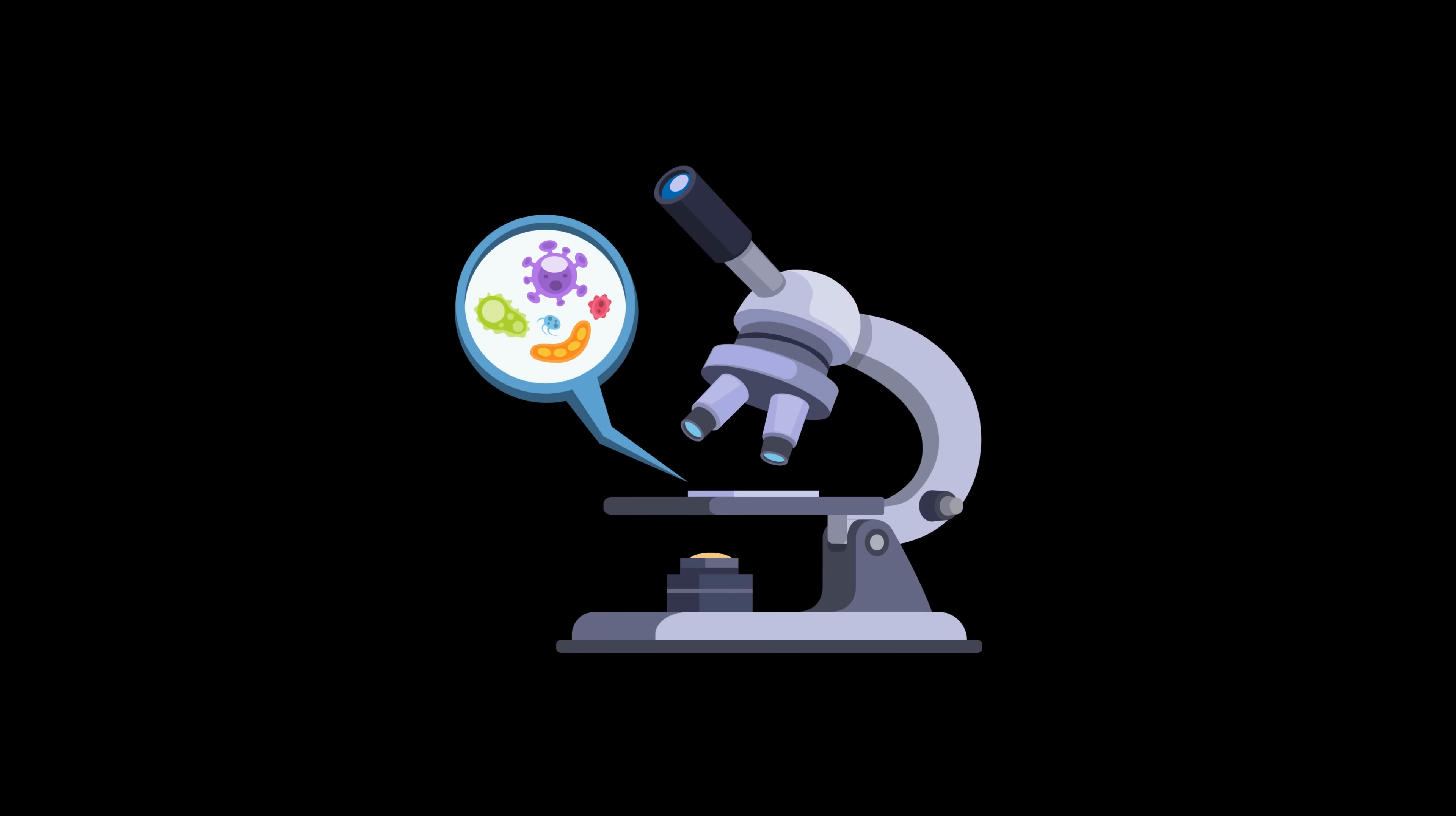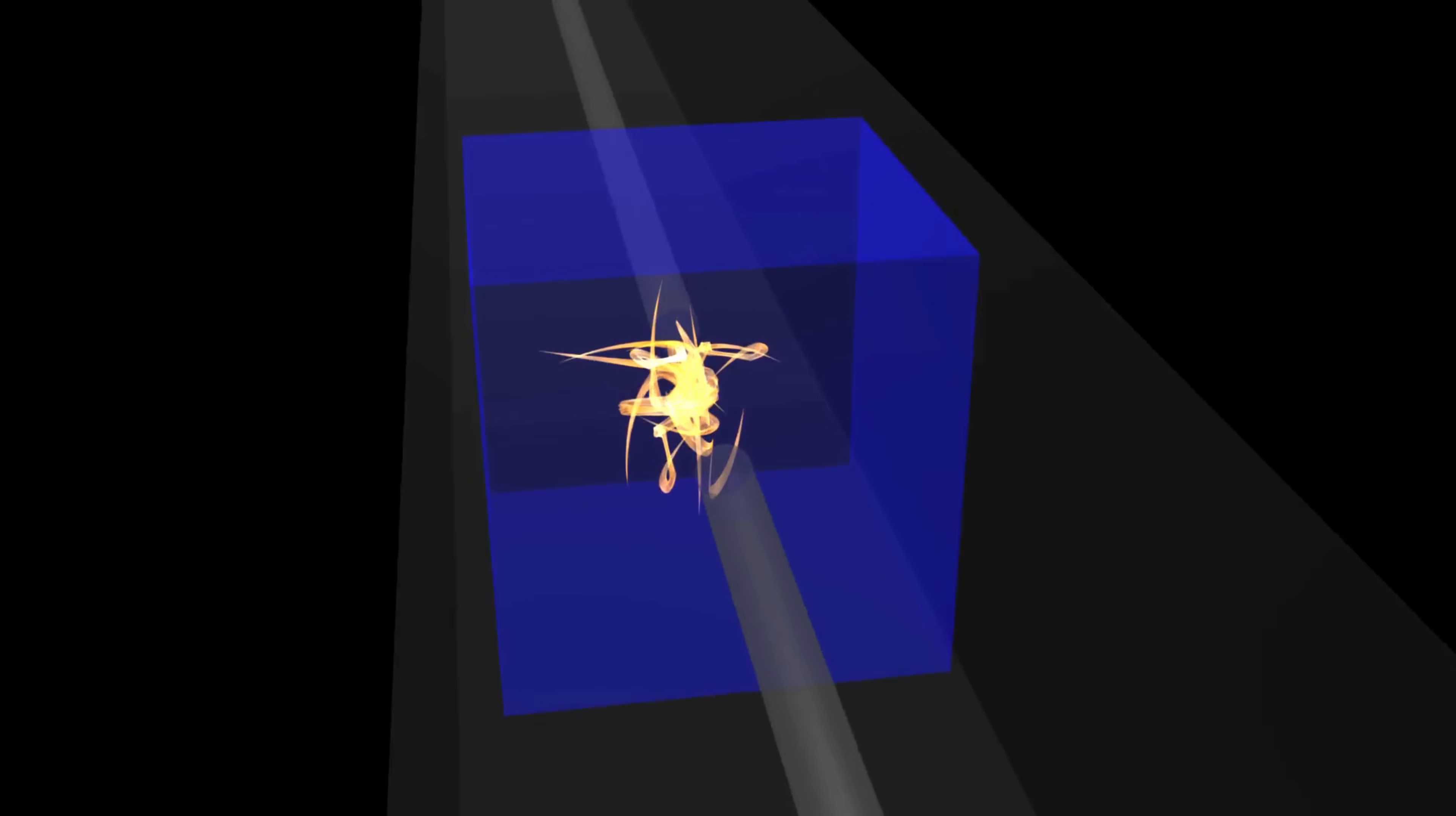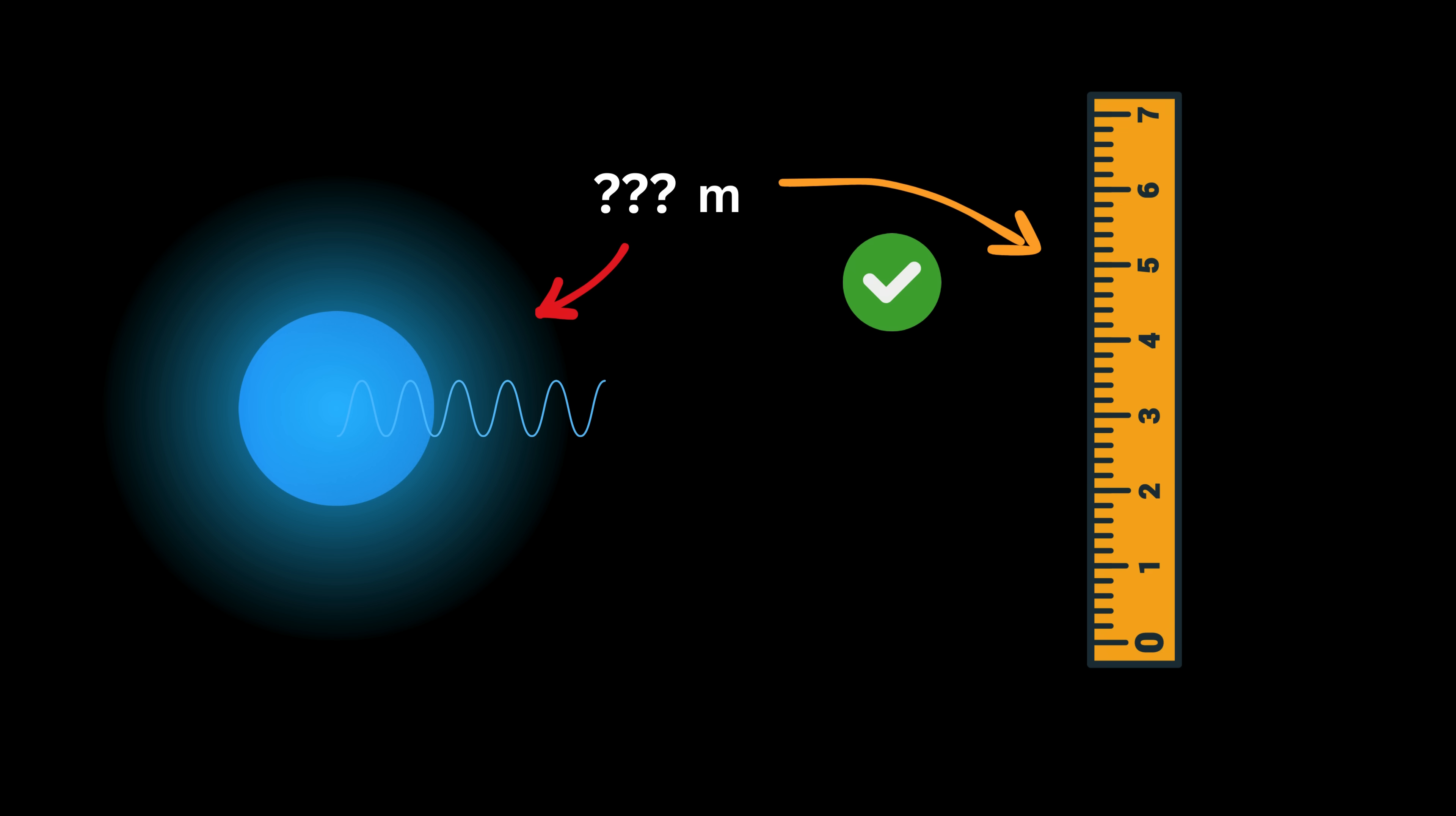We've built microscopes that see cells, electrons, even individual atoms. We've collided particles to look deeper and deeper inside matter. But is there a smallest possible length below which nature refuses to let us look into it? It turns out there is one such length, and it's called the Planck length.